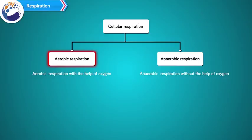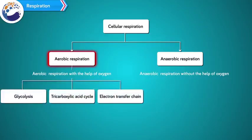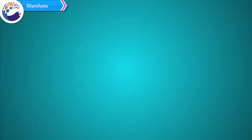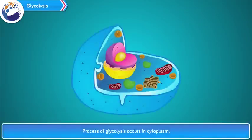In aerobic respiration, three processes are involved: glycolysis, tricarboxylic acid cycle, and electron transfer chain. The process of glycolysis occurs in the cytoplasm.